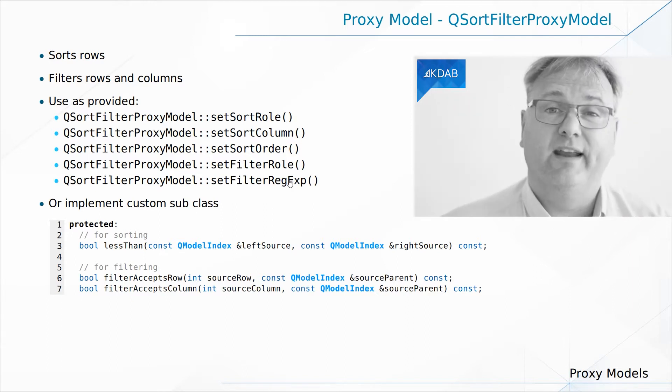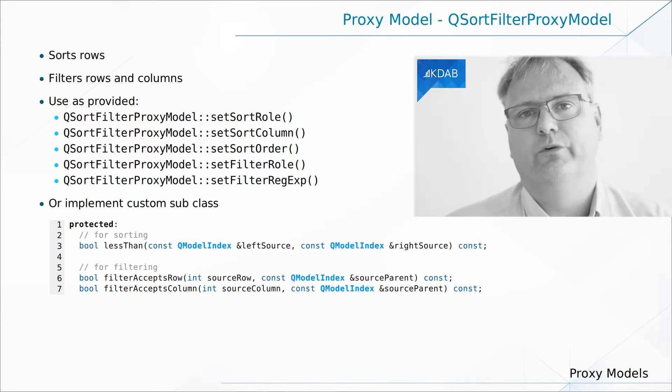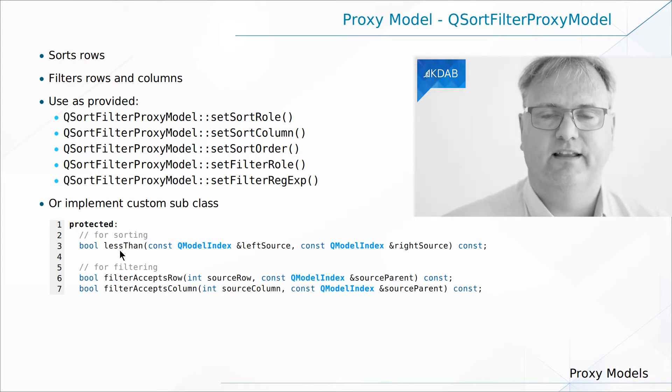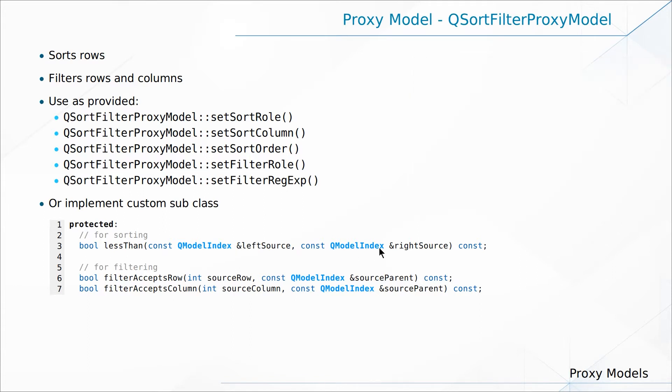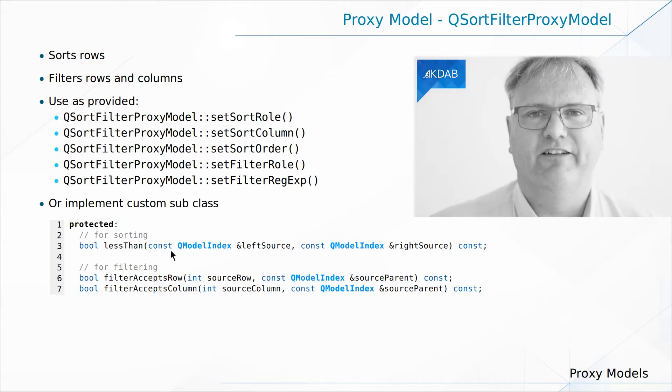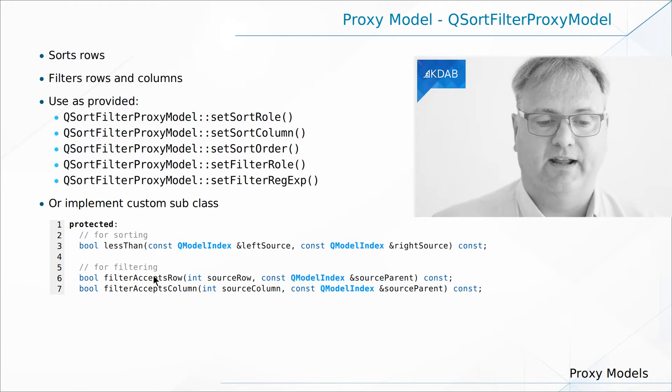For filtering, you specify which role you're filtering on, and you can filter on either a fixed string or a regular expression. It's only a string that you filter on, so if you want to filter on an enum as in our example, you would need to override one of these two methods. The lessThan method is for sorting — you're given two model indexes and you need to tell if the left one is smaller or greater than the right one. And for filtering, filterAcceptsRows asks: given row number i, should that row be included in the proxy model's output? Yes or no? You can do a lot with exactly that.